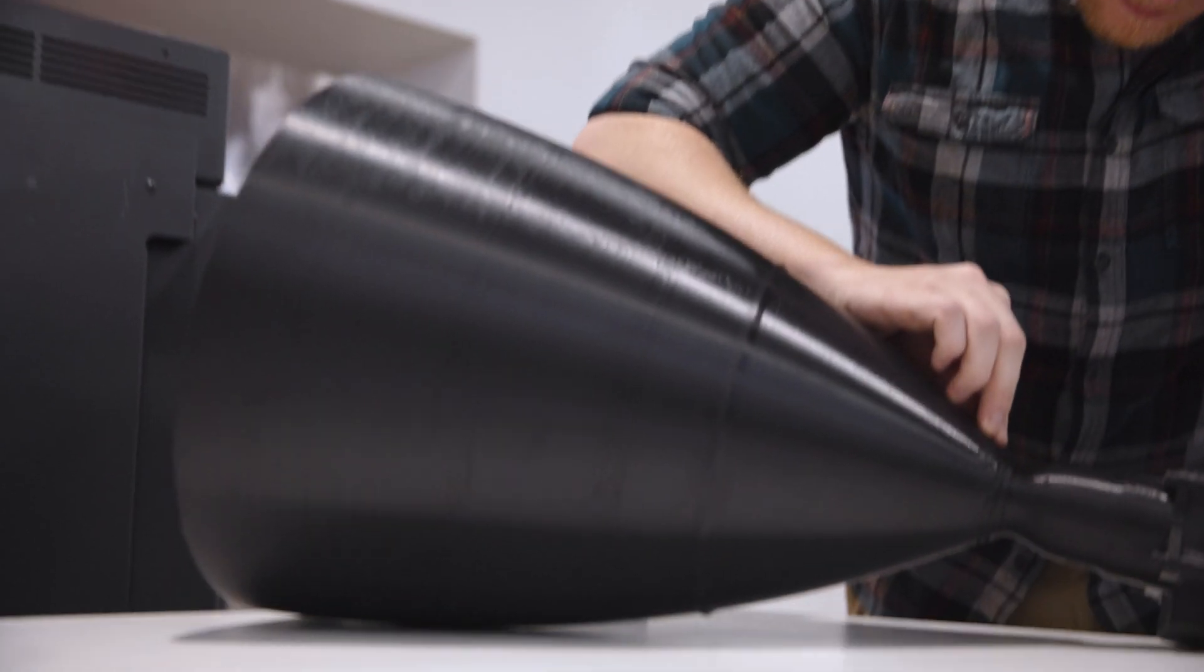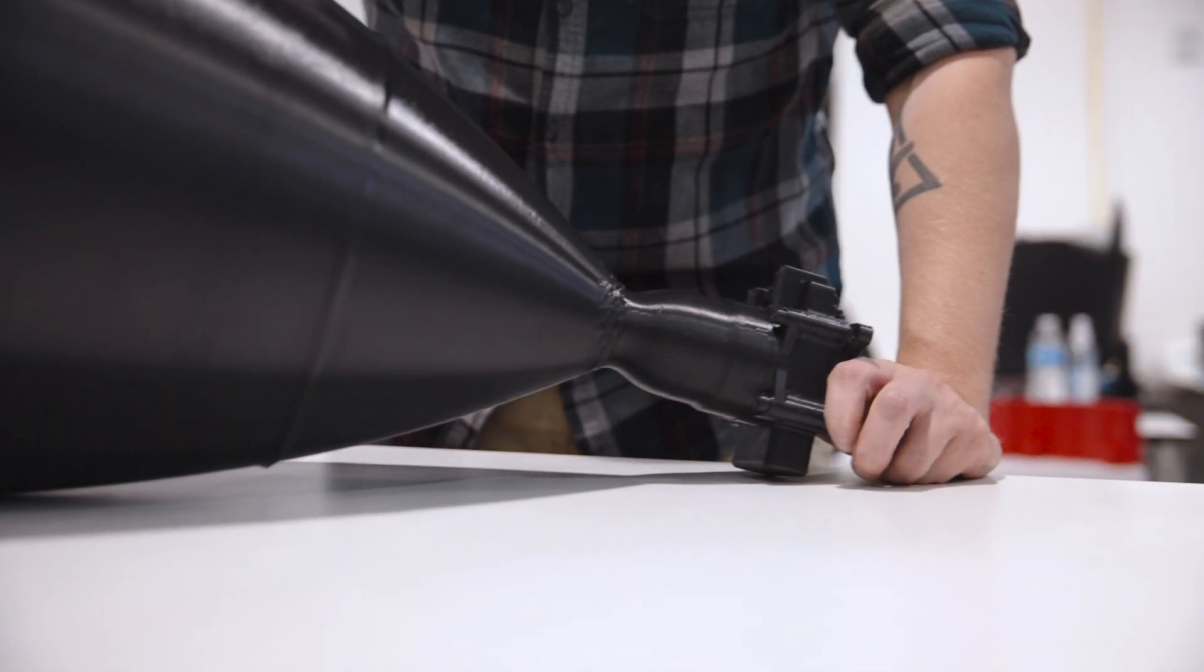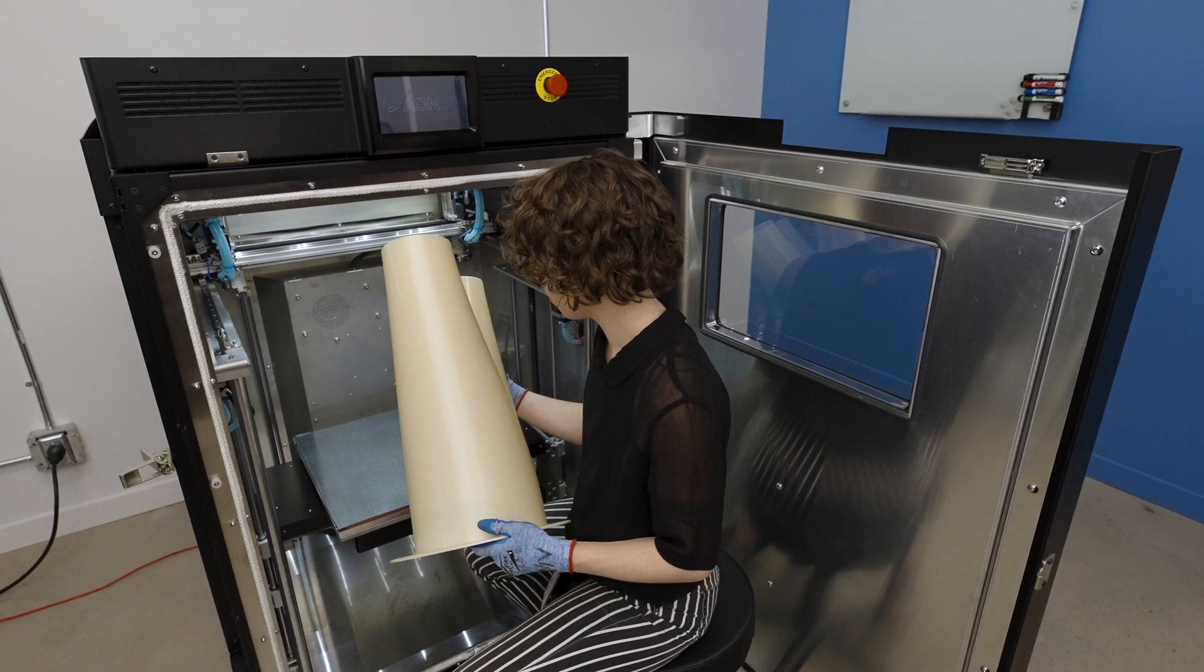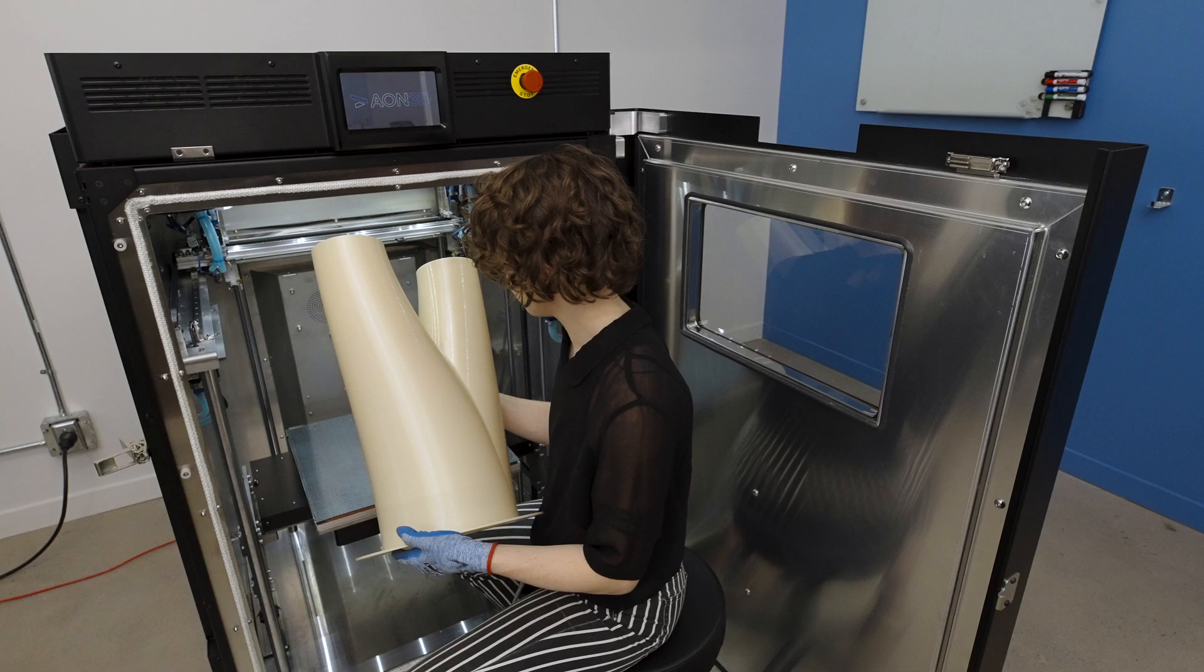We were looking for a few things. The ability to print large parts. The second thing was to have dual extrusion so we can print multiple materials. And then the third thing that was probably the most important was to be able to print high temperature materials. Aon's printer gave us all those options so there really wasn't any compromise there for us.